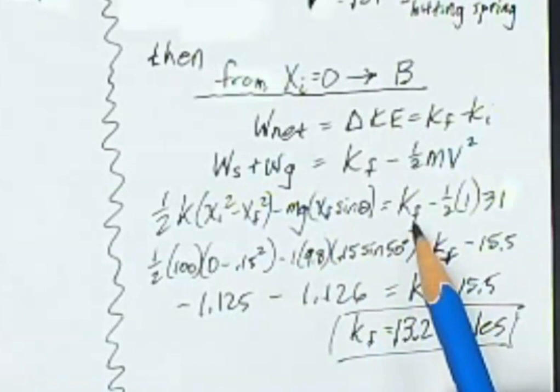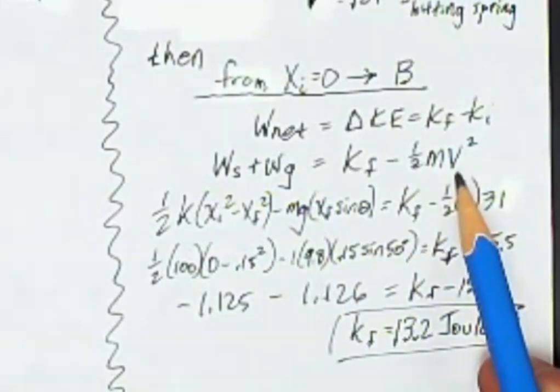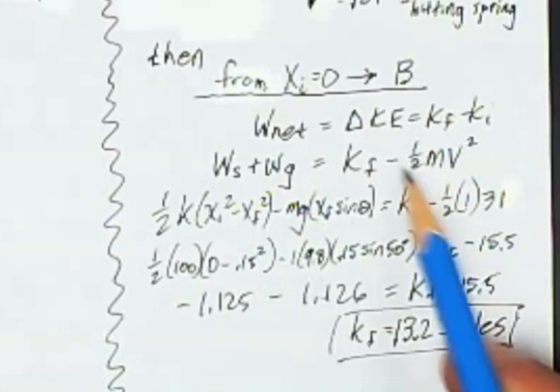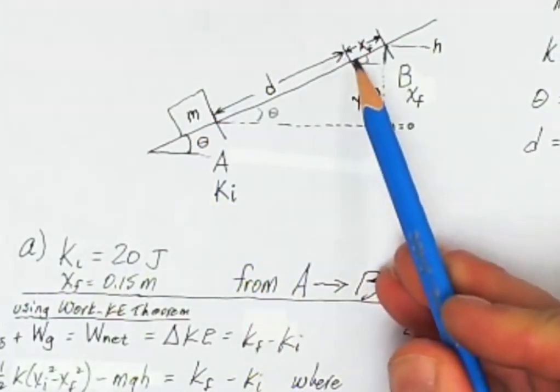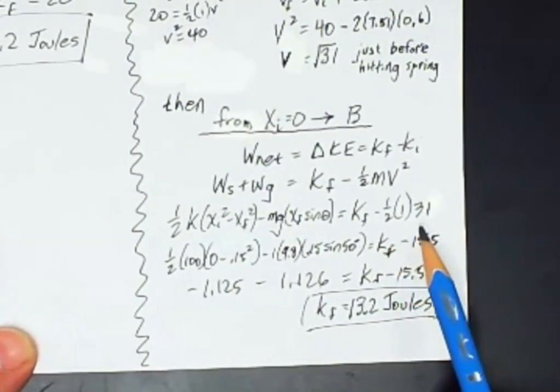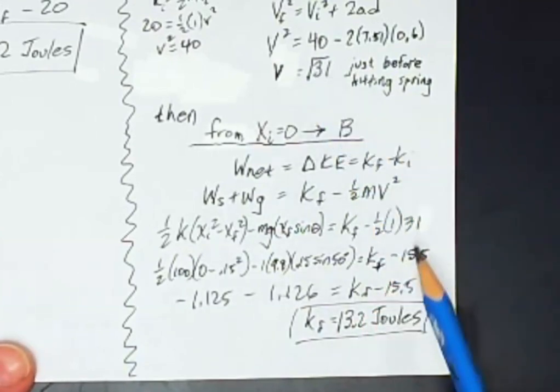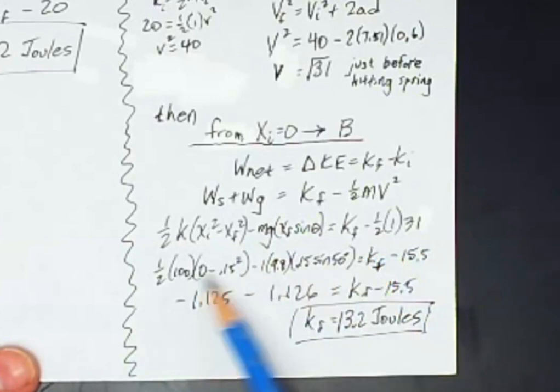And then k final, of course, I'm still trying to find that. And now my initial kinetic energy is not 20 joules. That was down here. Now I have to use the kinetic energy at this spot right there. So that's one-half mv squared, where if v was square root of 31, v squared is 31. And now plug in my numbers, solve for the final kinetic energy, and of course, I get the same answer. This is just another way of doing the problem. I should still get the same answer.